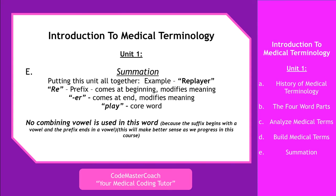In summation, when we put this unit together — for example, if I use the word 'replayer': 're' is the prefix, comes at the beginning, modifies the meaning. 'ER' comes at the end and modifies the meaning. And 'play' is your core word. So we've broken down 'replayer' — if ER means 'pertaining to,' re means 'to do again,' and play is the core, it means 'pertaining to doing it again, play.' No combining vowel is used in this word because the suffix begins with a vowel and the prefix ends in a vowel, and this will make better sense as we progress in the course.